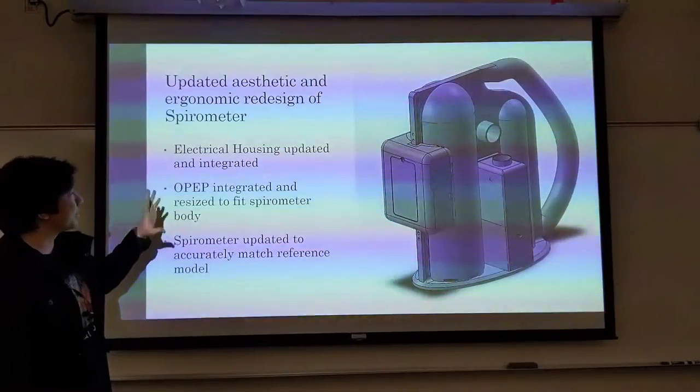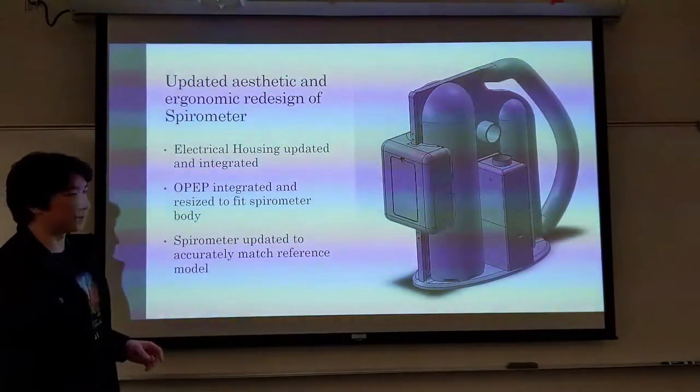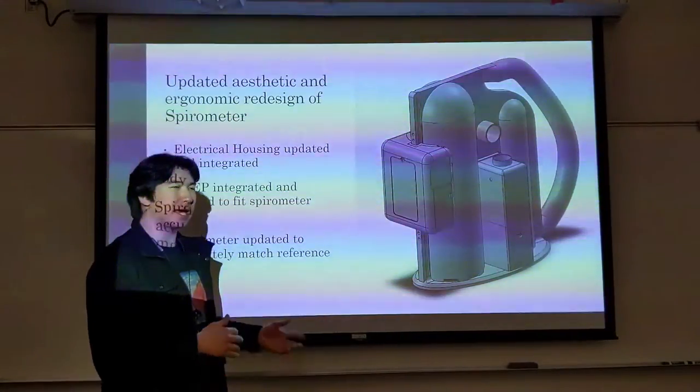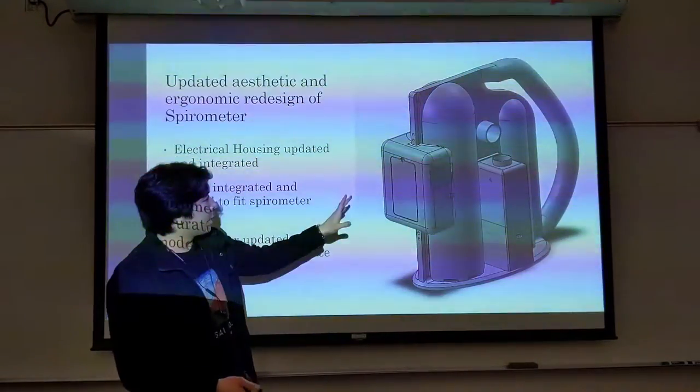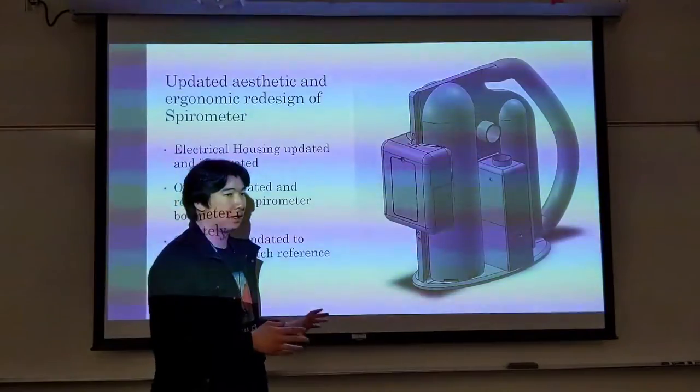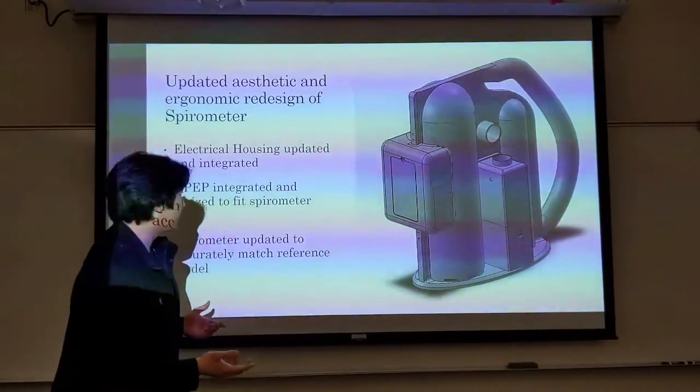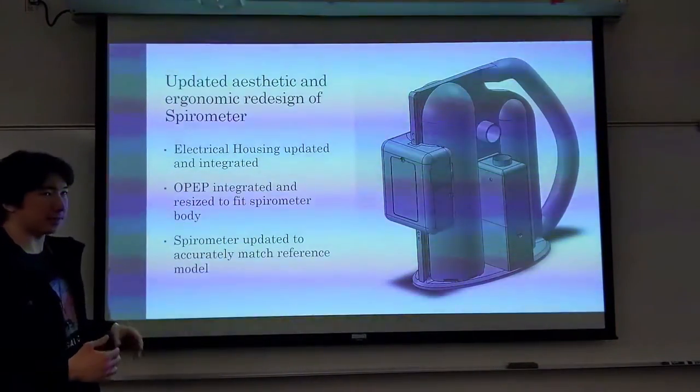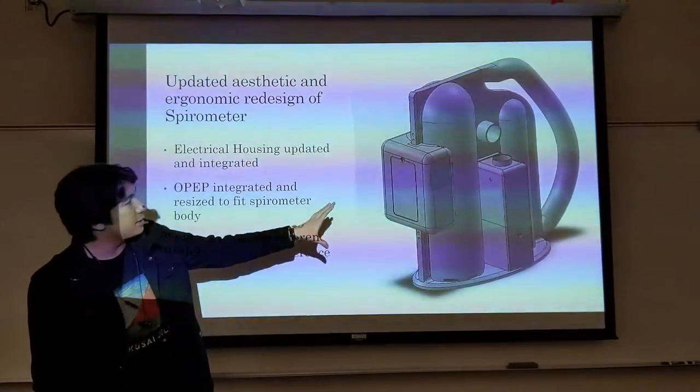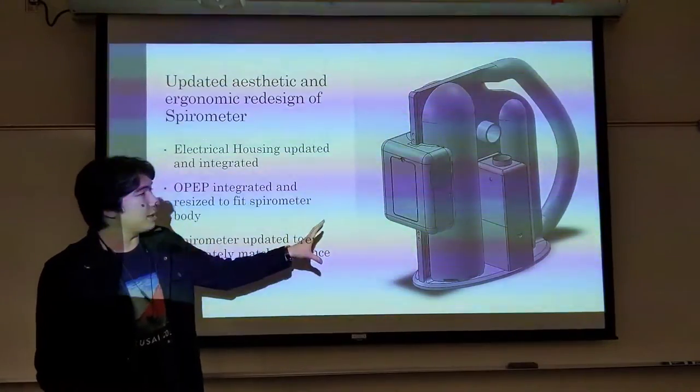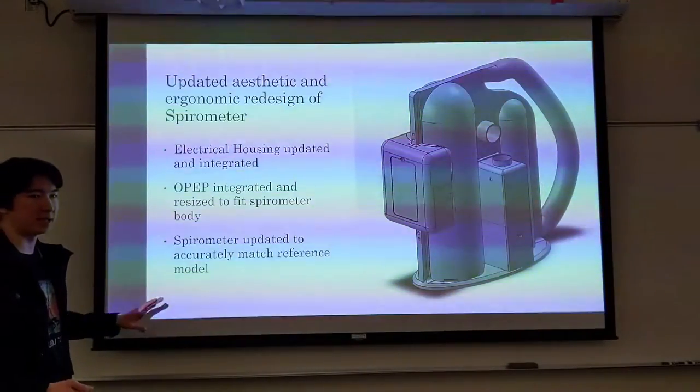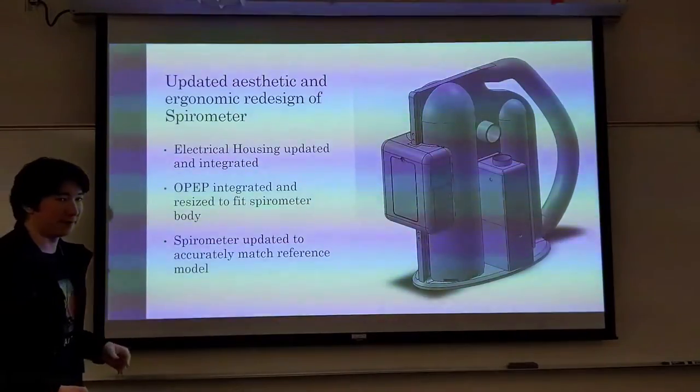Here is the overall updated aesthetic and ergonomic redesign of the spirometer. First and foremost we have the electrical housing updated. It used to be a large lot that looks kind of added and slapped on at the end. Now, as you can see here in the illustration, it is much more low profile and much more integrated into the device overall. The OPAP has been fully integrated and resized to fit the spirometer. The cut-up within the spirometer housing allows it to fit within but still be removable as well. And finally the spirometer has been fully updated to match the Voldyne counterpart that we are basing it off of.